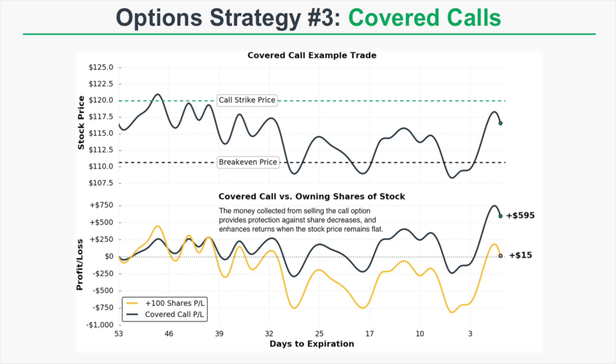There's an annotation on the graph that says the money collected from selling the call option provides protection against share decreases and enhances returns when the stock price remains flat. The long stock position of 100 shares reaches a loss of about $750 at the lowest point compared to only $250 for the covered call position — because selling a call option against your shares provides downside protection when the stock price decreases.